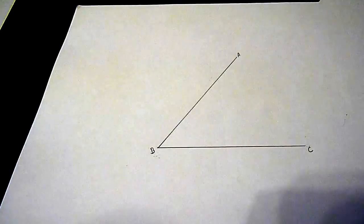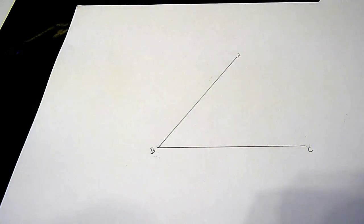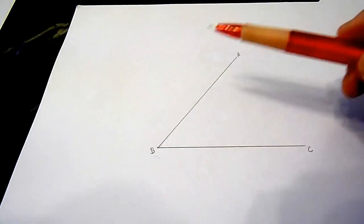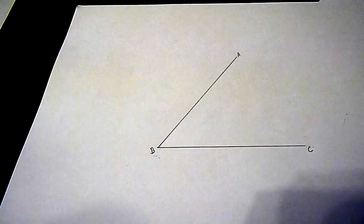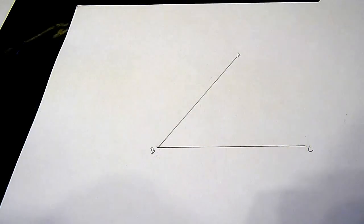To construct a path that is equal distance from the lines AB and BC, it is the same as constructing an angle bisector for the angle ABC.